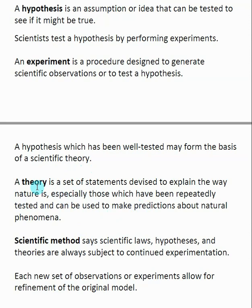A theory is only valid if it's been repeatedly tested. We hold the term 'theory' for something that has actually been shown to be true repeatedly — it's not something we call something initially. More importantly, a theory is used to make predictions: if a theory is really sound, you should be able to predict something about the way nature occurs.